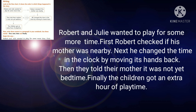Robert and Julie wanted to play for some more time. First, Robert checked if his mother was nearby. Next, he changed the time in the clock by moving its hands back. Then, they told their mother it was not yet bedtime. Finally, the children got an extra hour of playtime. This is the way you write a paragraph using first, next, then, and finally.